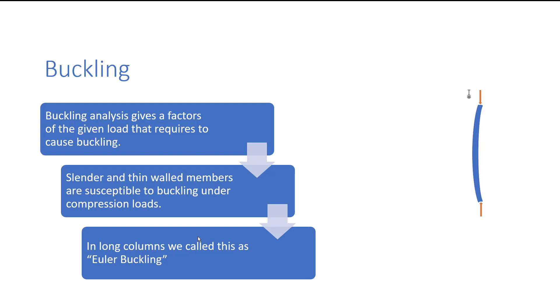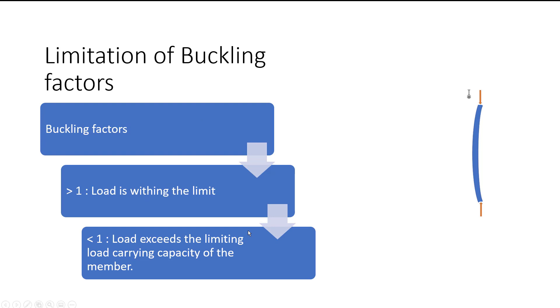The slender and thin-walled members are susceptible to buckling under compression loads. Generally, these kinds of thin-walled members and slender members will go for buckling. This is generally called as Euler buckling, and we have Euler equation as well for calculating the design concepts for slender sections.